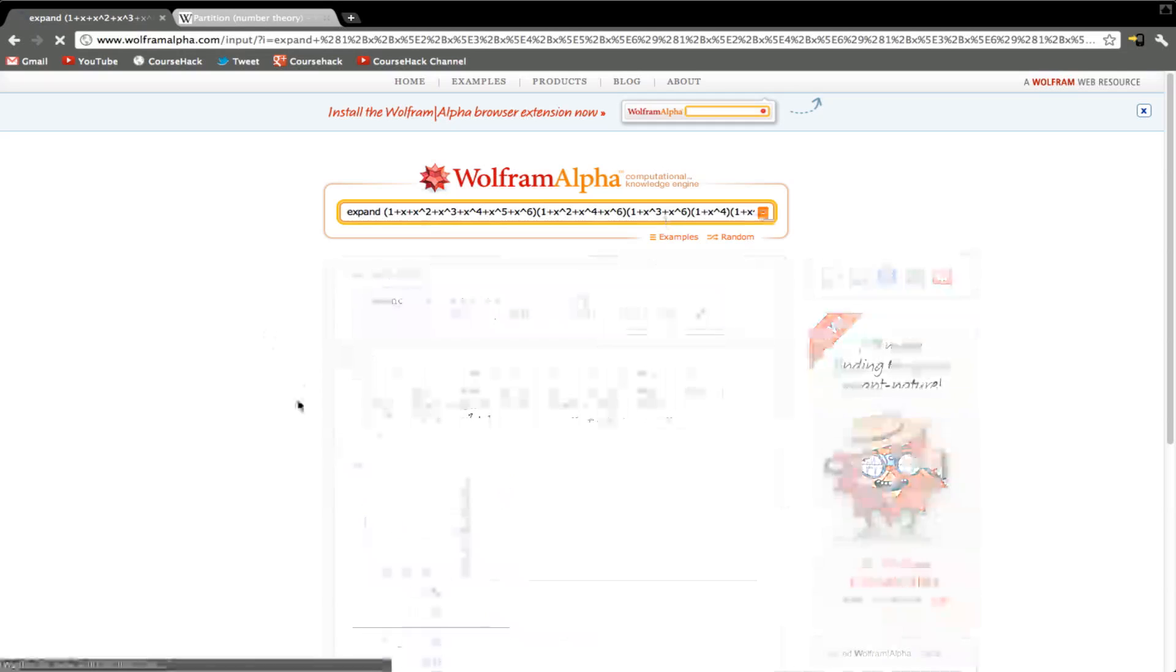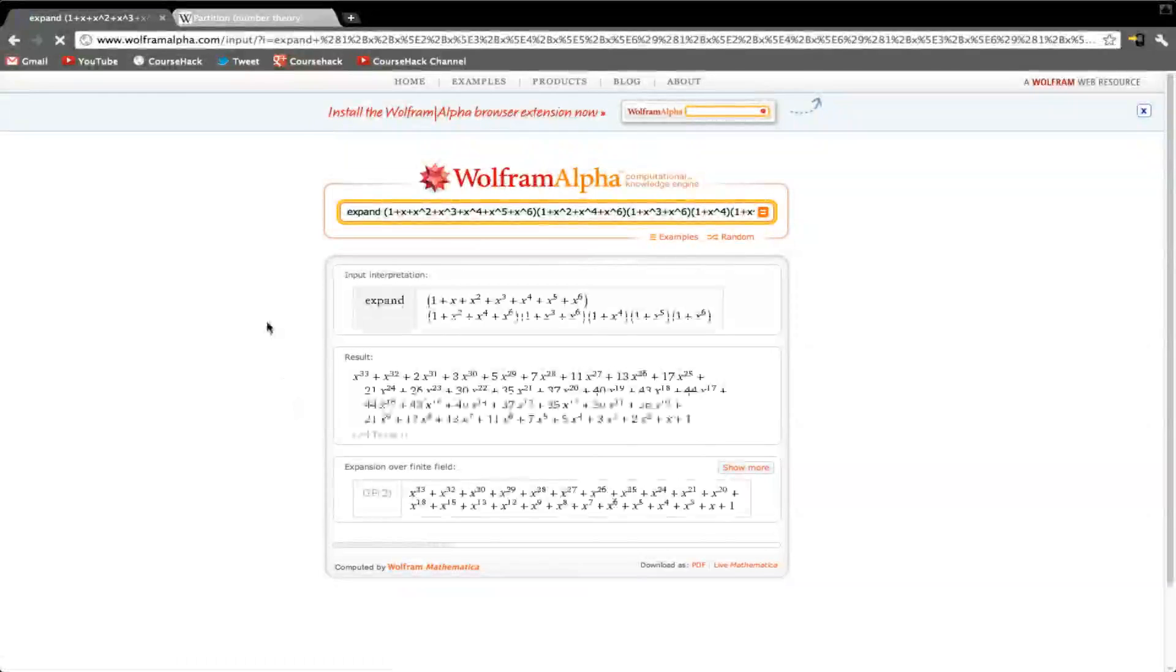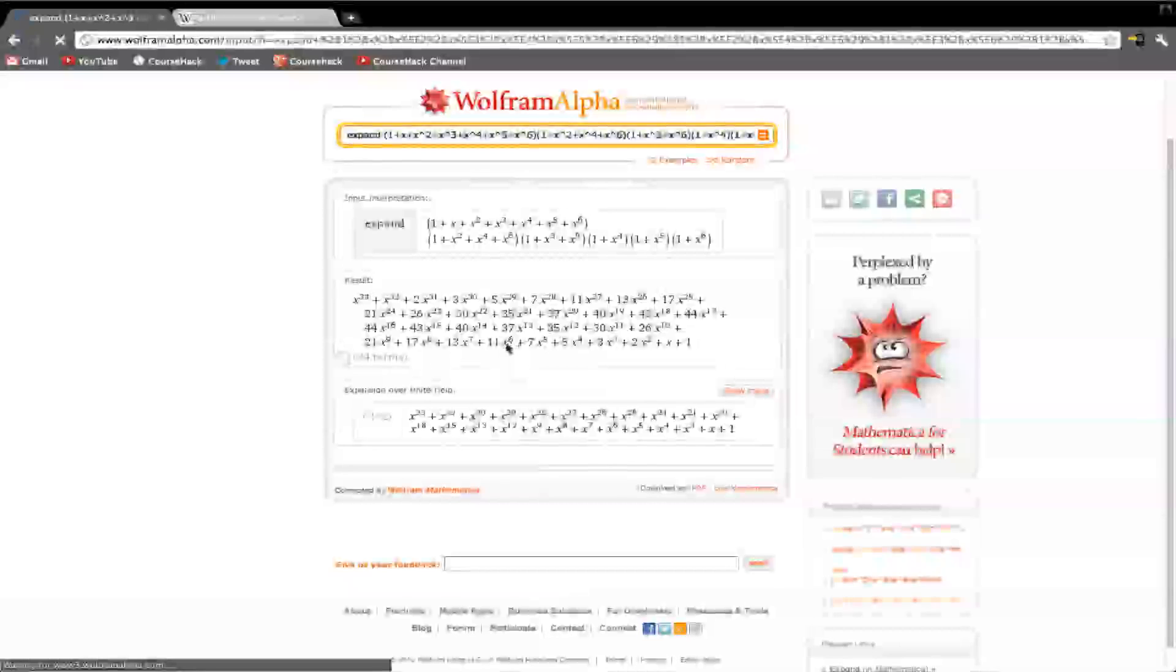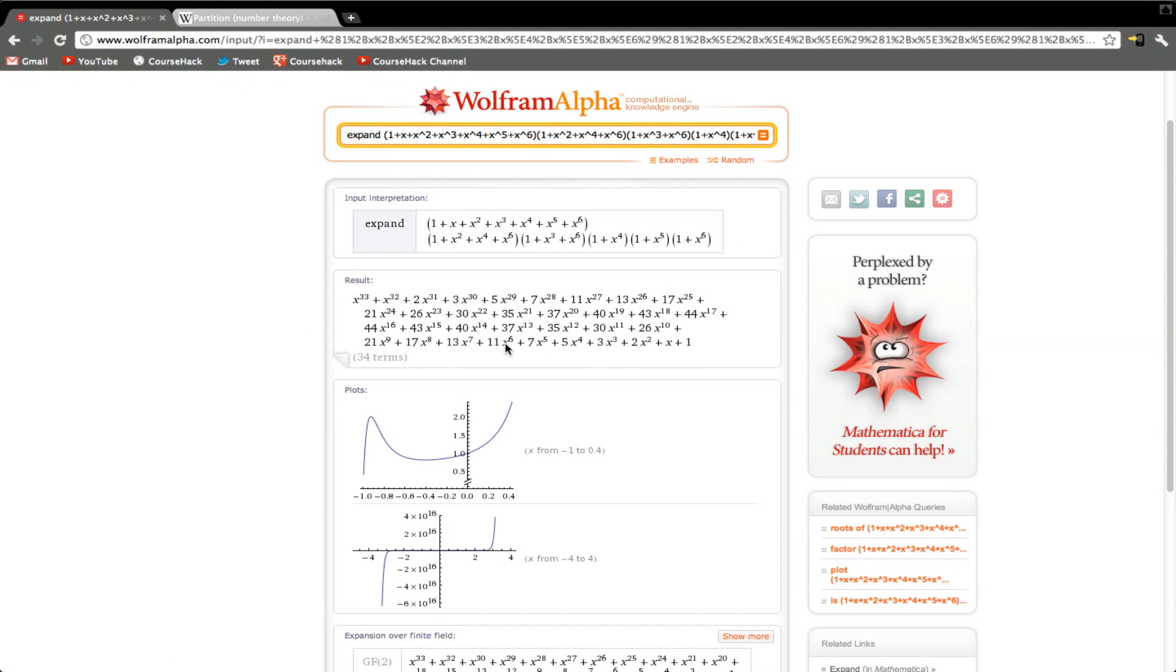And if you expand this, alright, so if you look at the coefficient of x to the 6th right here, so right over there, you're getting 11. 11 is the number of partitions that we have.